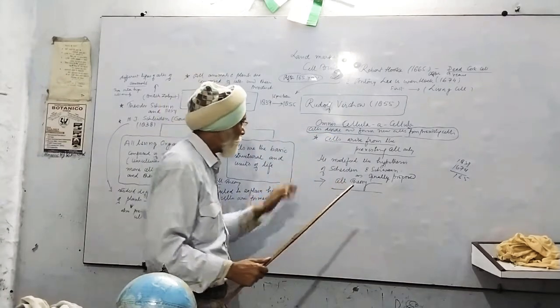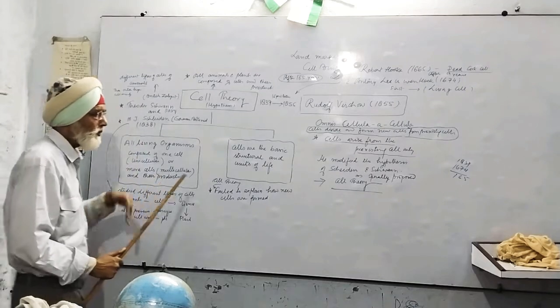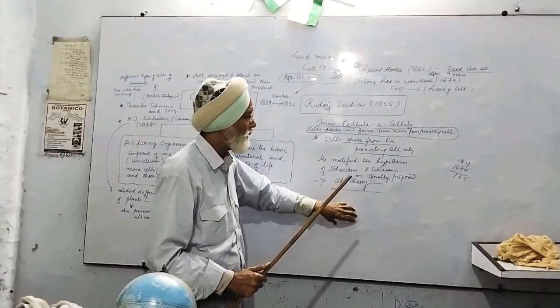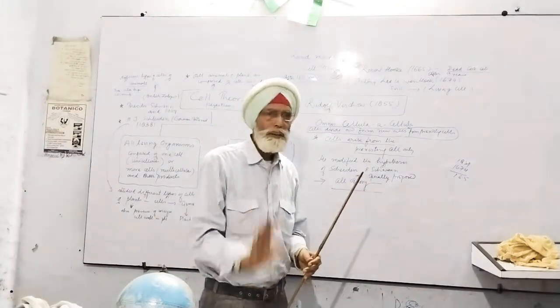And he was the first person to modify the Schleiden and Schwann cell theory to have a new approach that cells arise from the pre-existing cell only. Thank you very much. This is Rudolf.